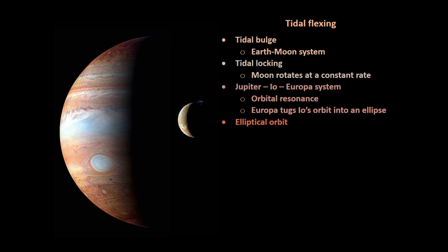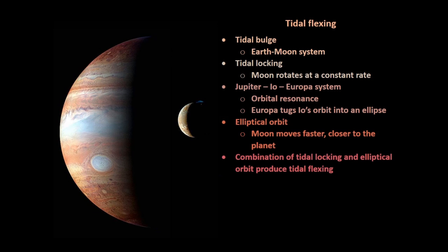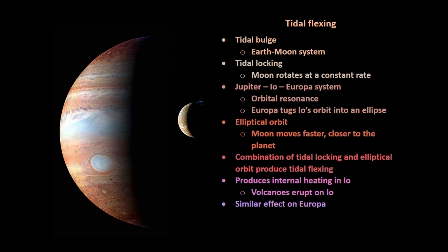This elliptical orbit causes Io to move faster when it's closer to Jupiter. The combination of tidal locking and elliptical orbit produces tidal flexing. This tidal flexing produces internal heat in Io, causing volcanic eruptions to happen.